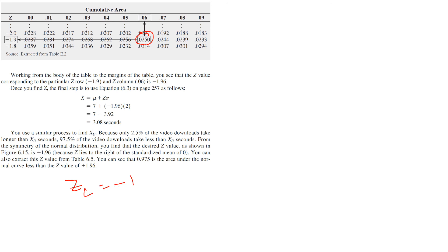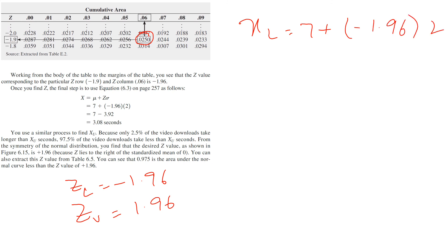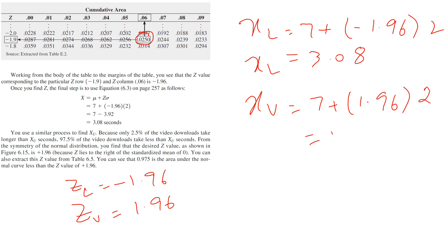From the table against 0.025, z is minus 1.96, so z_lower is minus 1.96 and z_upper is plus 1.96. The lower value is negative and the upper value is the same magnitude with a positive sign. So x_lower equals 7 plus (minus 1.96 times 2), which gives 3.08, and x_upper equals 7 plus (1.96 times 2). That is another example related to finding x values.